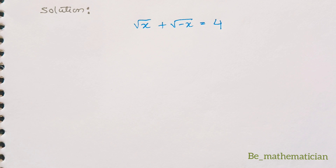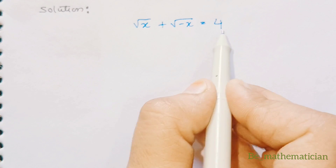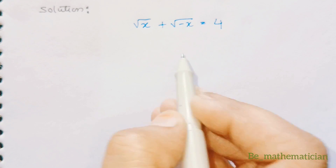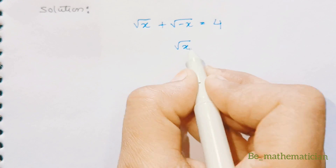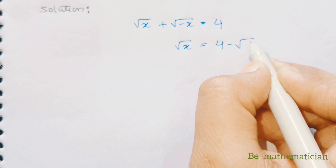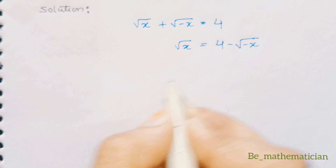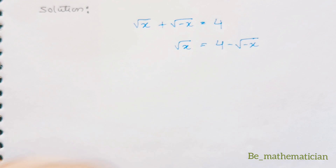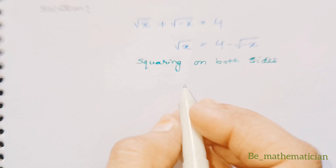Come to the solution. In the first step, let's take √(-x) to the right hand side. We get √x = 4 - √(-x). To remove the square root sign, let's do squaring on both sides.